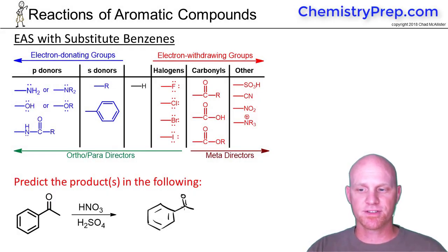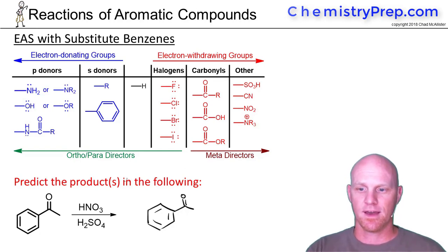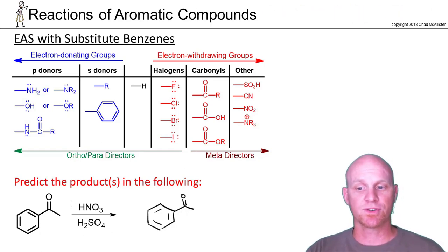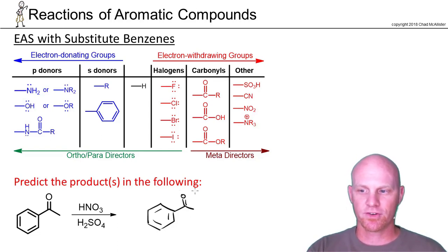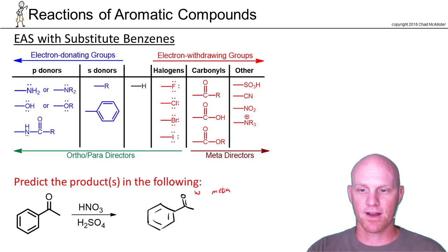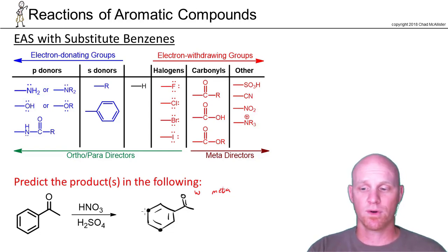We're going to predict some products in EAS reactions with substituted benzene rings. In this case, HNO3/H2SO4 — we're doing nitration, we're adding a nitro group. This carbonyl group is an electron-withdrawing group and it is a meta-director. It doesn't really matter which meta-position you choose — this one or this one — they're totally equivalent.